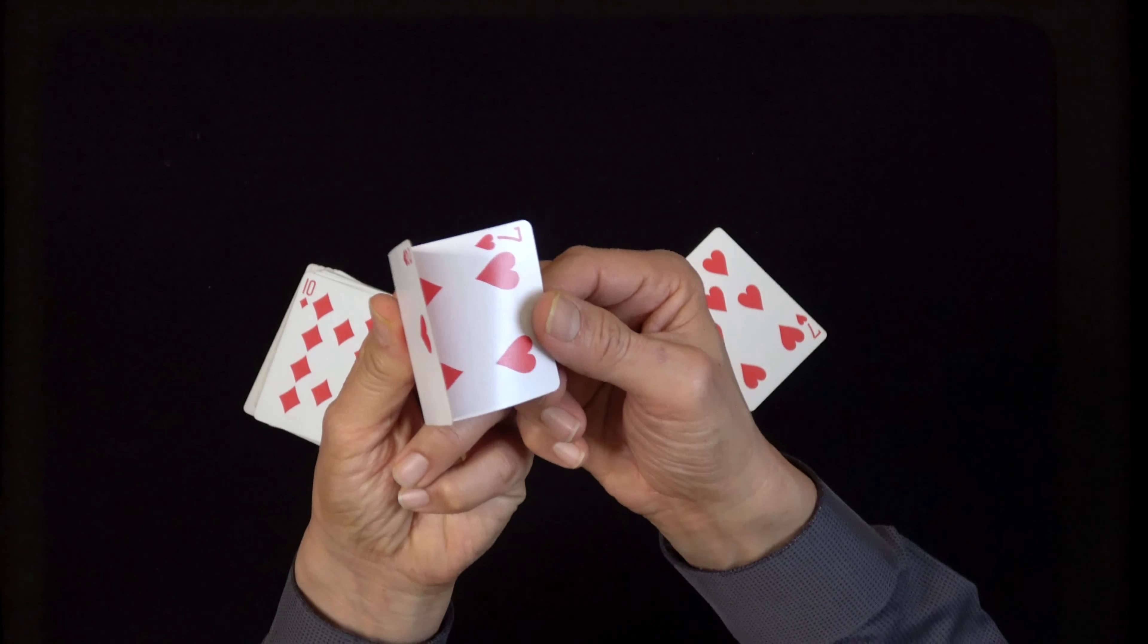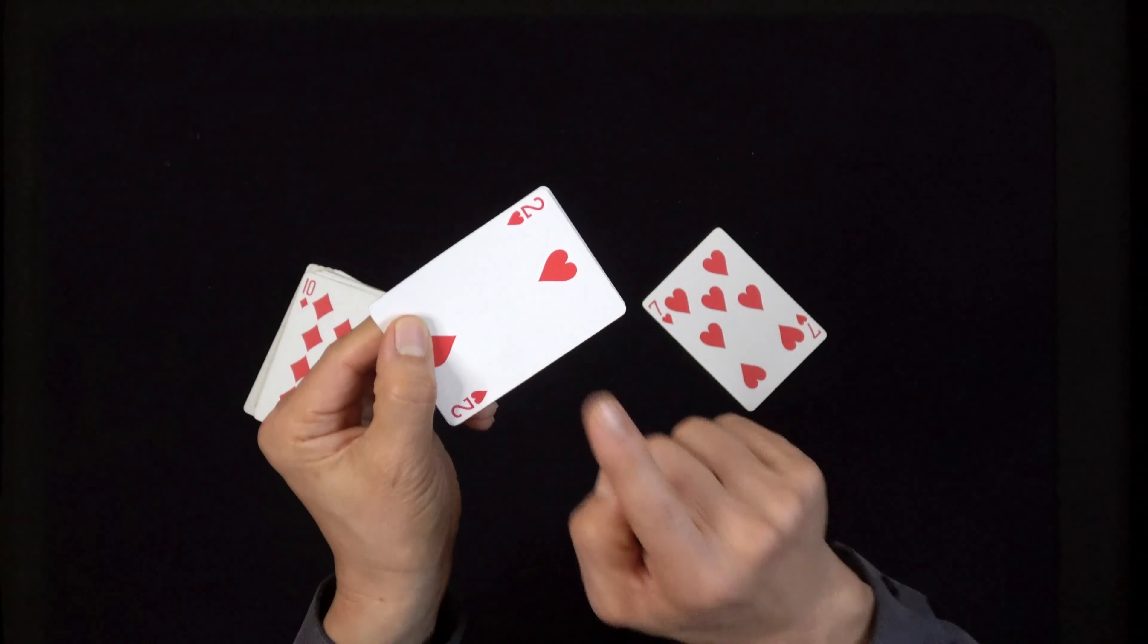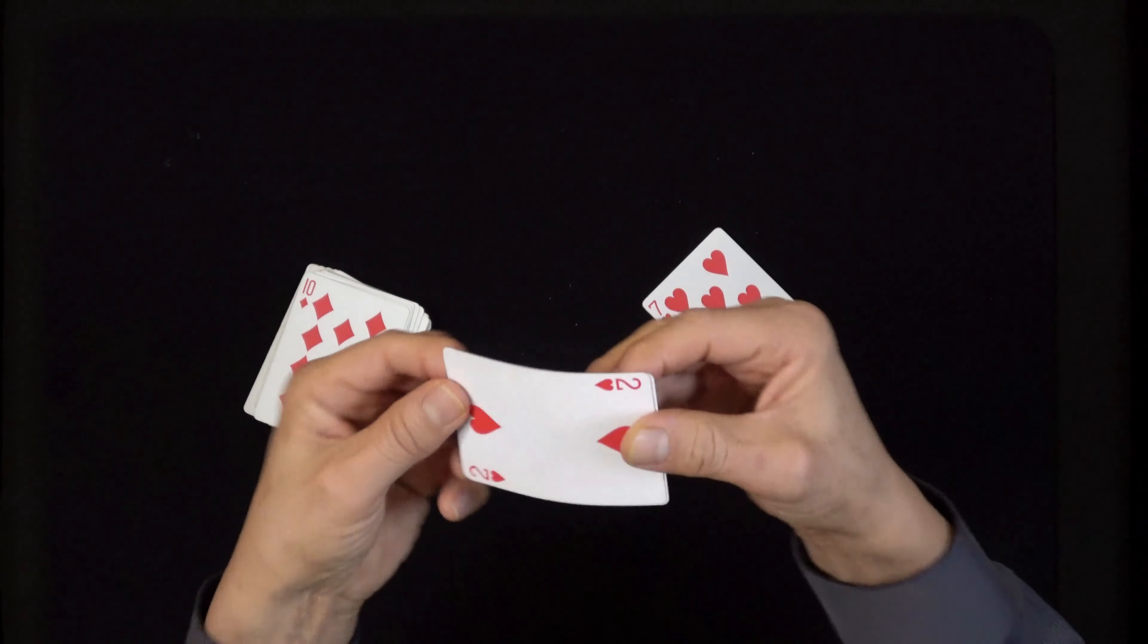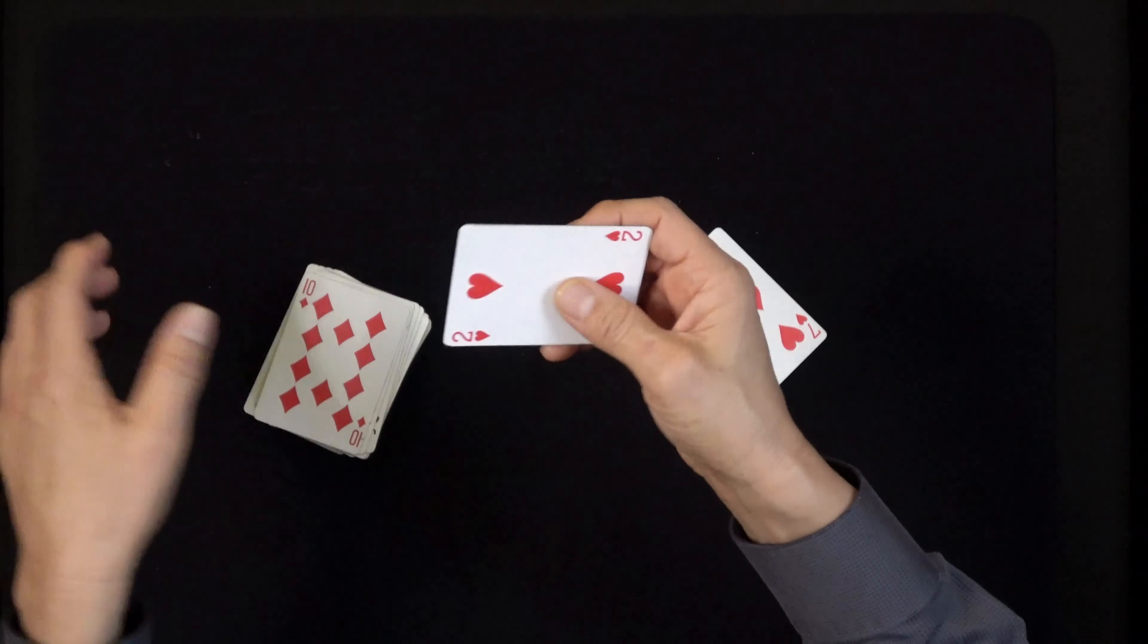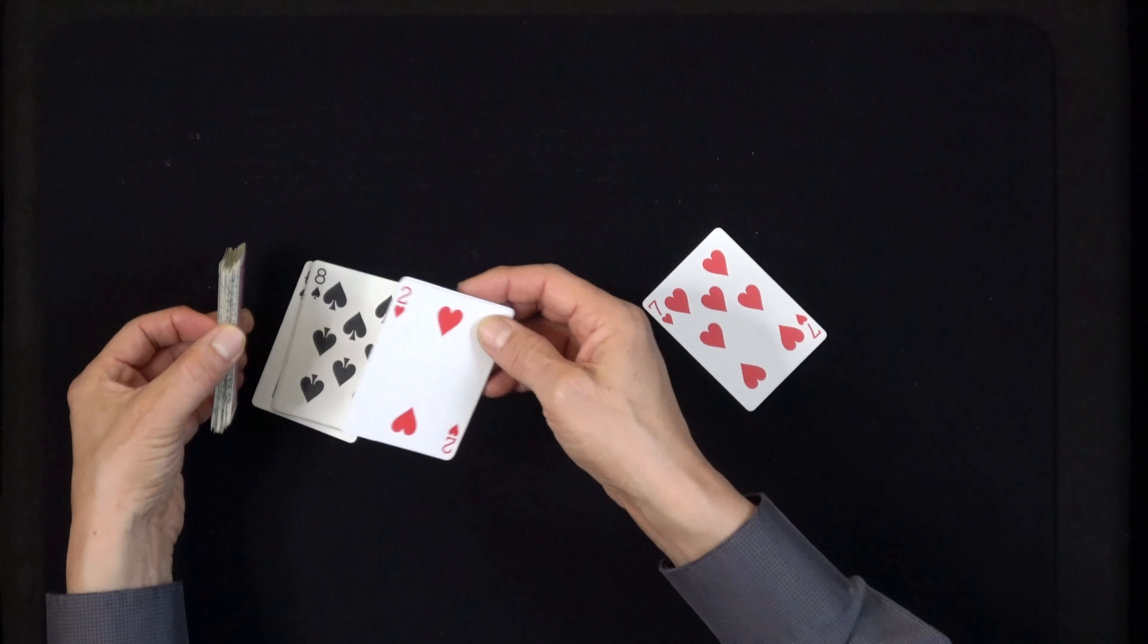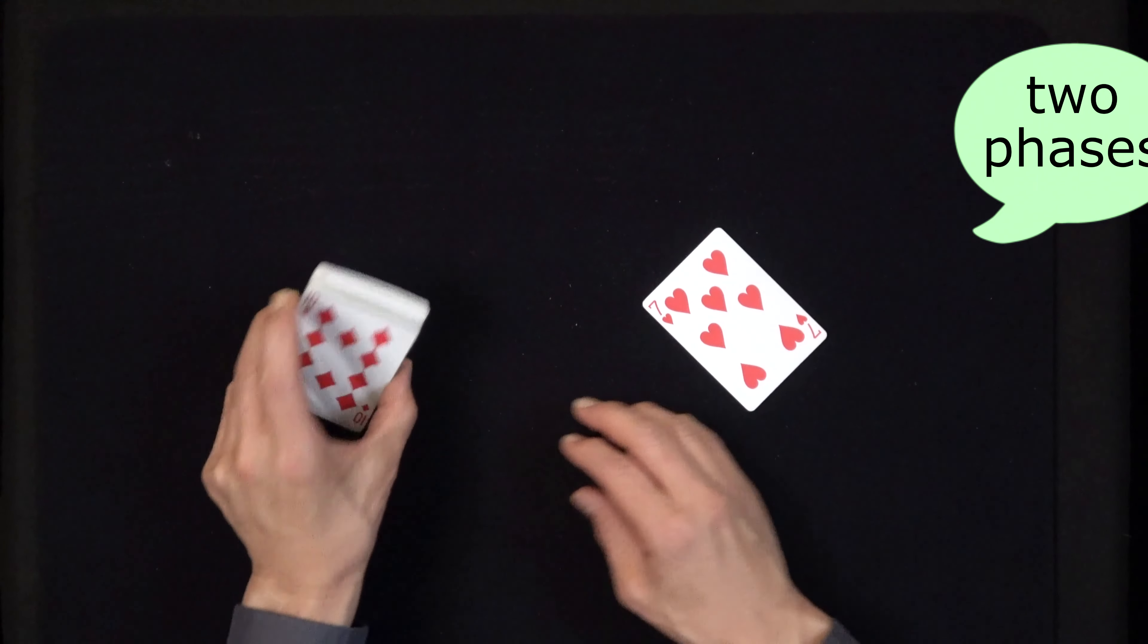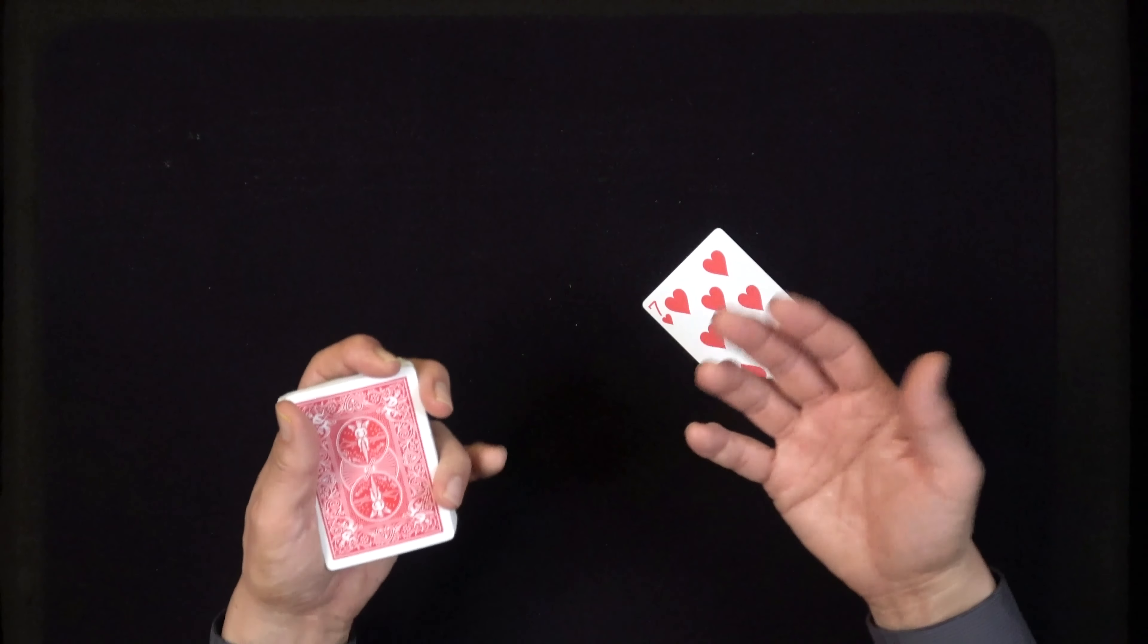Now I happen to choose the seven of hearts. You can use whatever card you want, but the card that appears someplace else has to be the same card. And so in this case, seven of hearts, and back here I have seven of hearts and I have this gimmick card. It's glued together right here at the bottom.